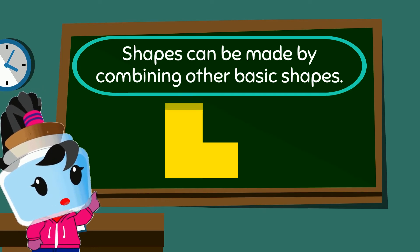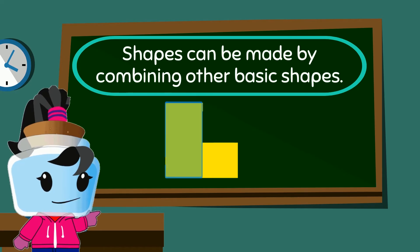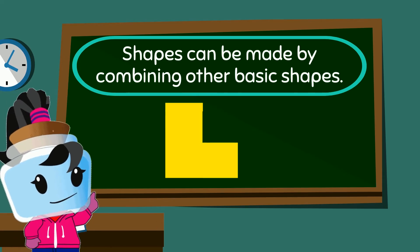For example, this L shape is made out of a rectangle and a square. Isn't that cool?